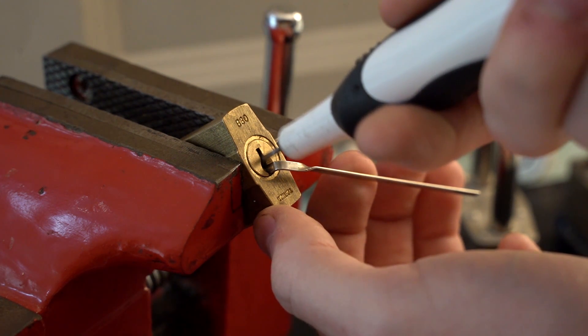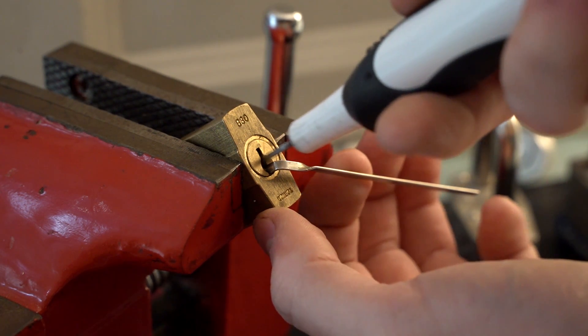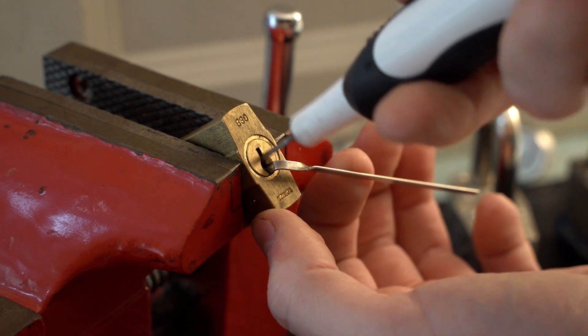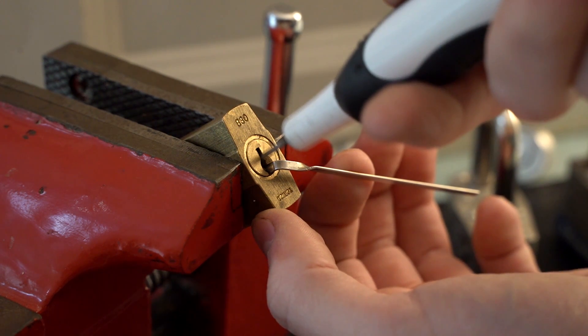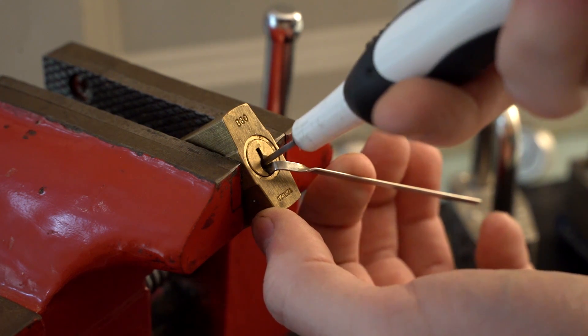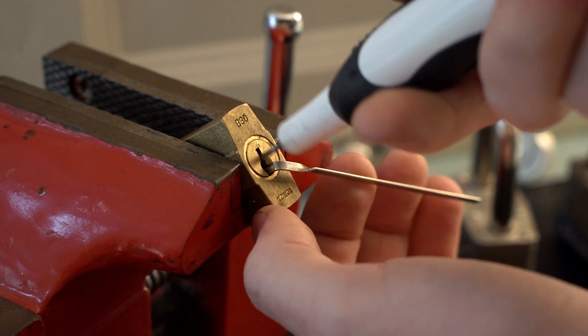You should be making small adjustments in the pressure of the tension to adapt to changes in the lock. As the pins are set you may require more or less tension and the plug may slightly turn when a pin is set.